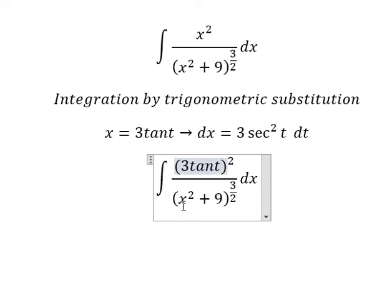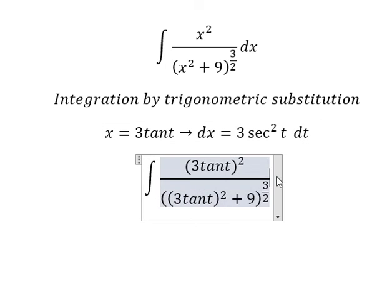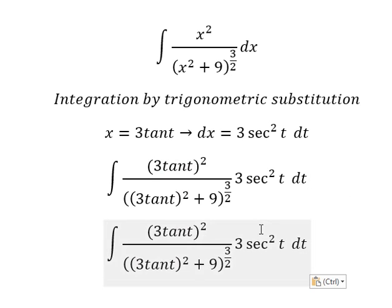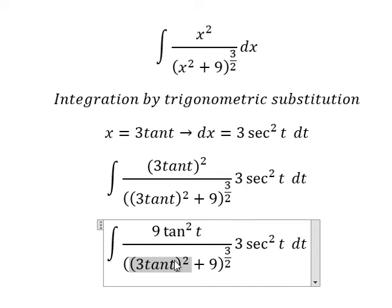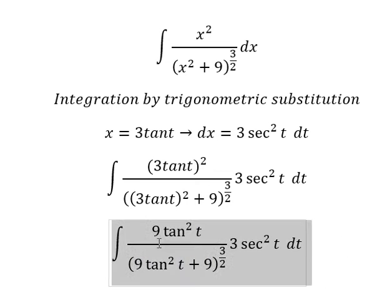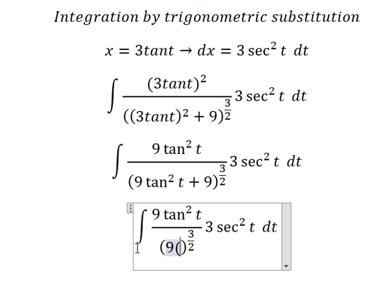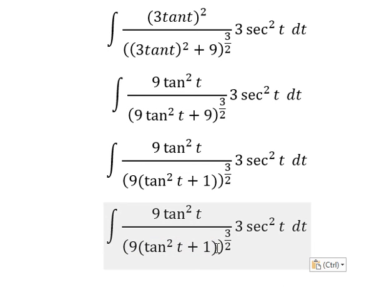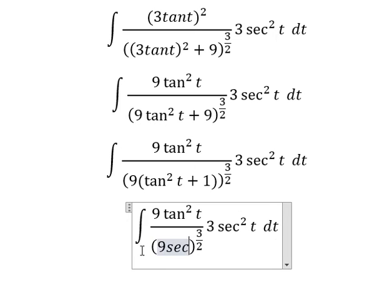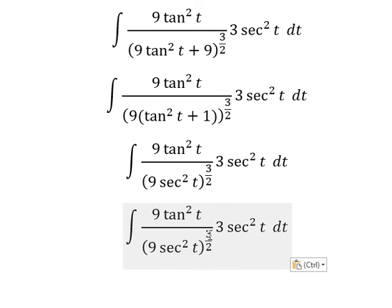Here we replace x with the substitution. We have 9 tan²(t), and again 9 tan²(t). We do factorization and get sec²(t), with 9 raised to the power 3/2.